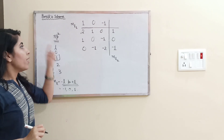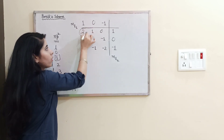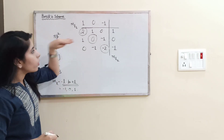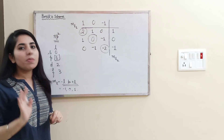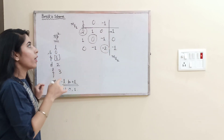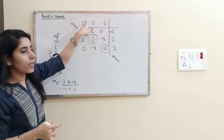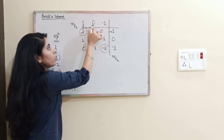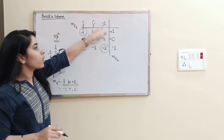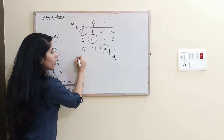Now observe that for the diagonal elements — that is ML = 2, 0, 0, and −2 — if you look at the values of ml1 (vertically) and ml2 (horizontally), both will be the same. For example, for ML = 2: ml1 = 1 and ml2 = 1. Similarly for ML = 0: ml1 = 0, ml2 = 0. And for ML = −2: ml1 = −1, ml2 = −1. So for diagonal elements, ml1 and ml2 are the same.